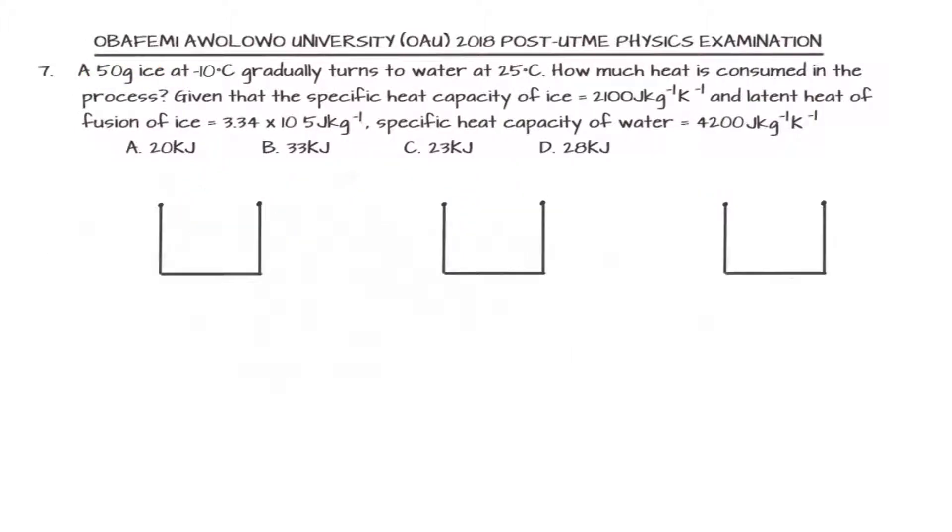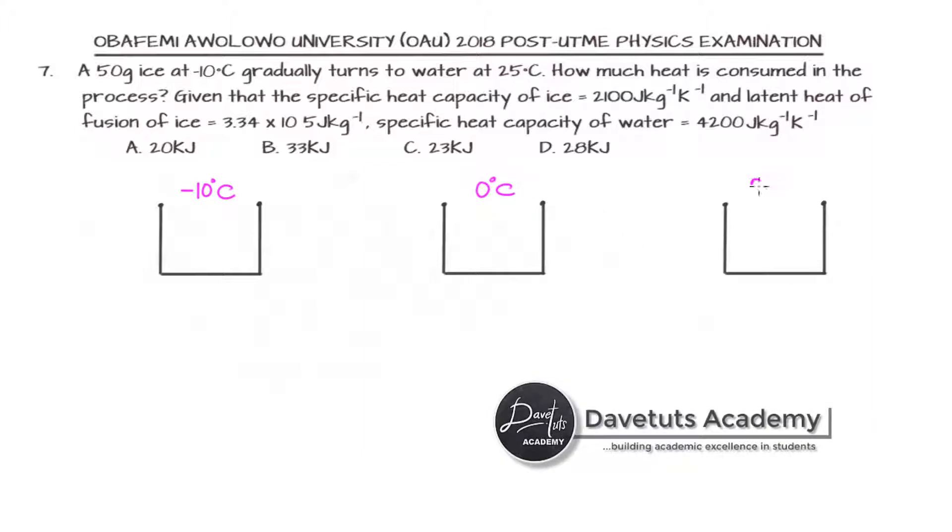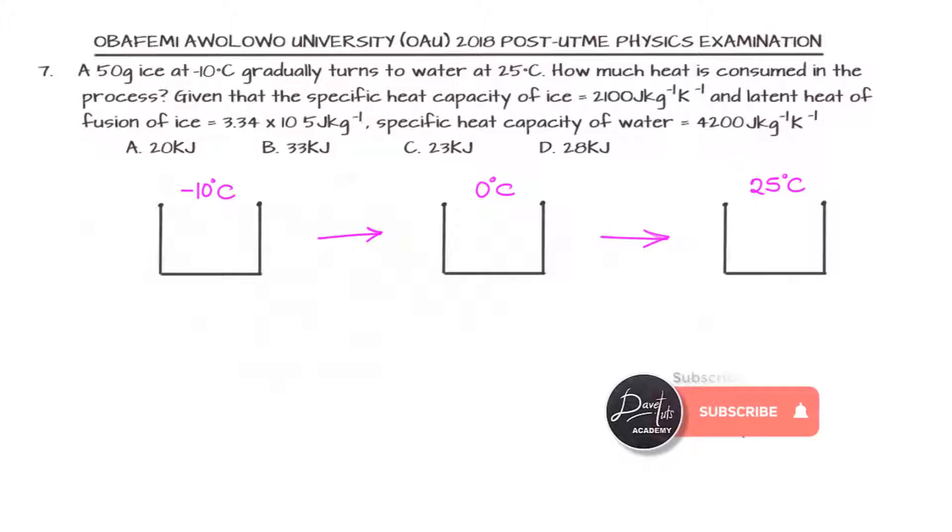If we are looking at this as the three stages that the process will undergo, we have the stage at which the ice is at minus 10 degrees Celsius. Then the 0 degrees Celsius, where we are having transition from ice to water. And then the water being heated up to 25 degrees Celsius. Let's say we have this as the 50 gram ice in a container that we are going to be heating up.